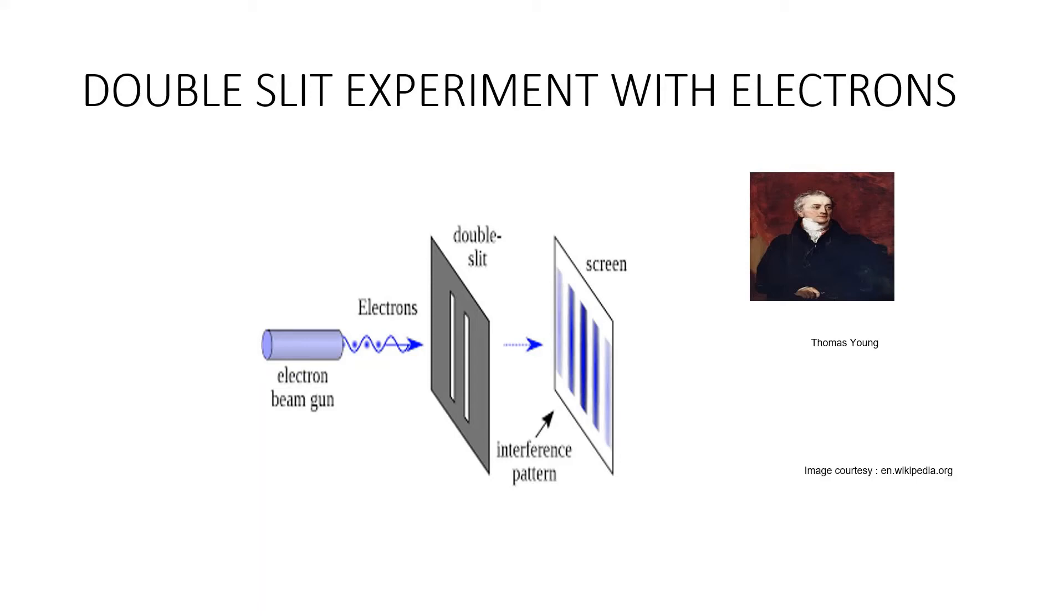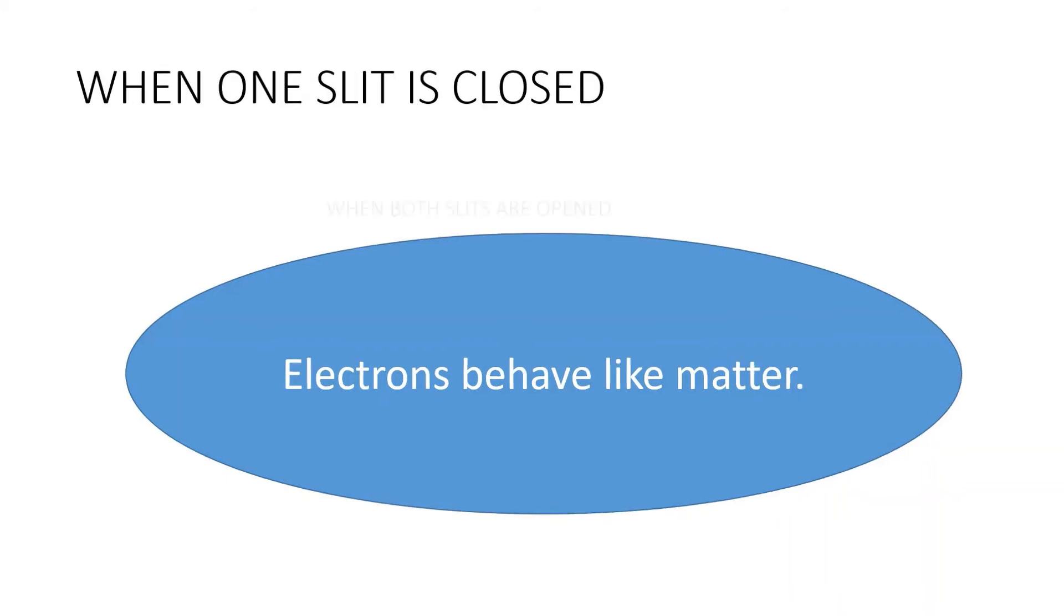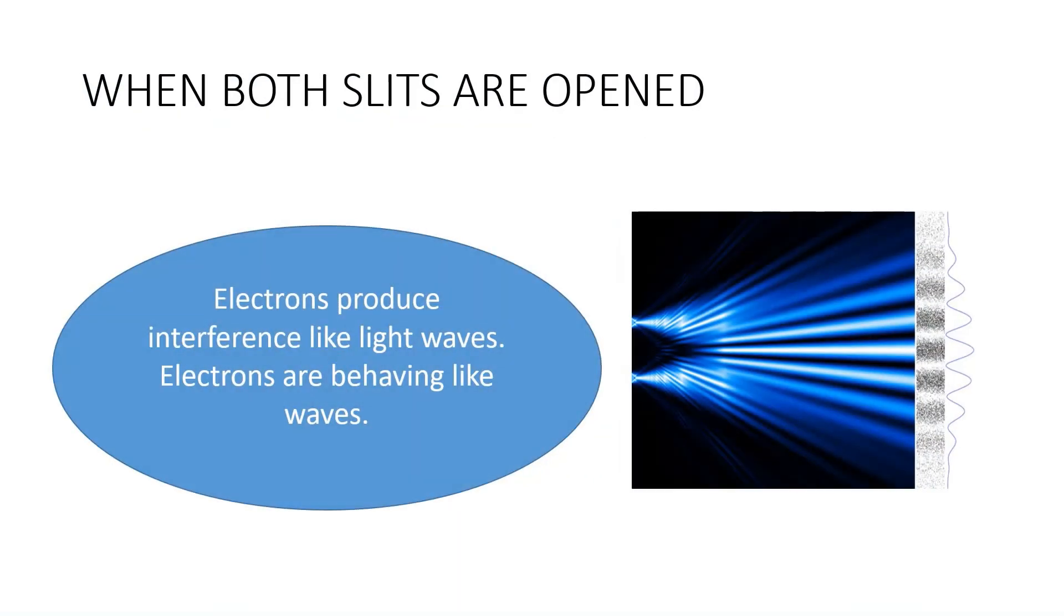The first mystery of quantum mechanics comes when both slits are opened. We can see interference patterns on the screen which is same as that of light and the electrons are behaving like waves.